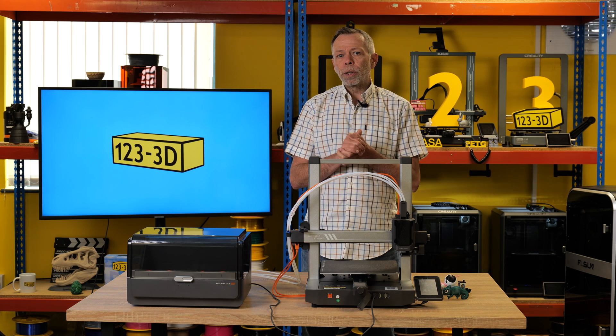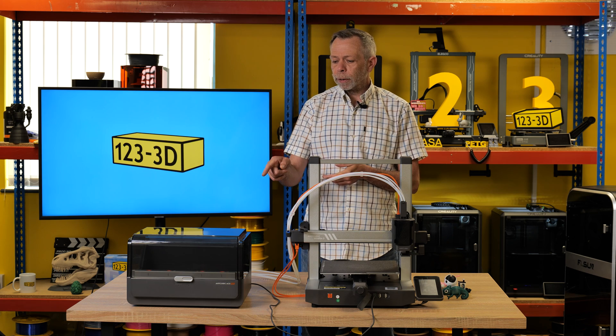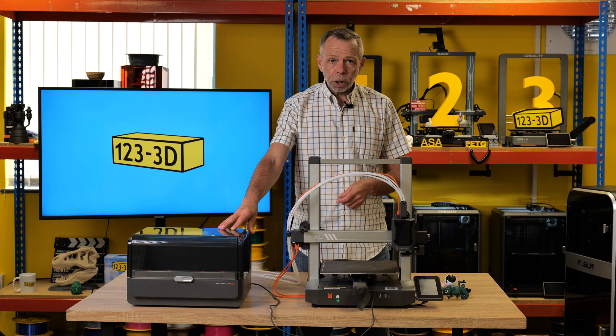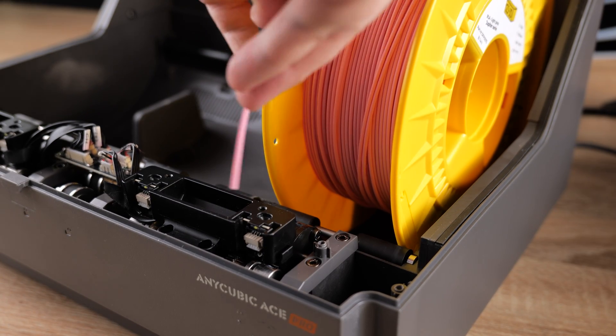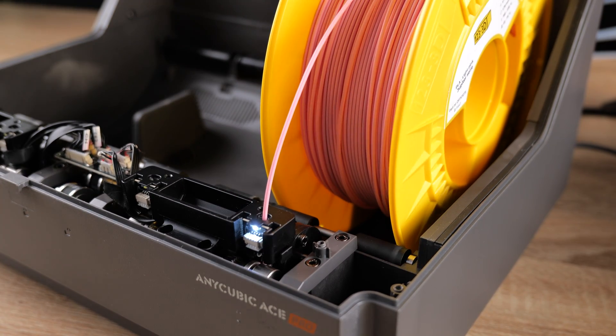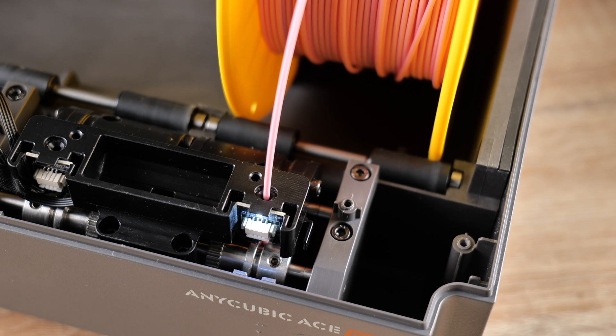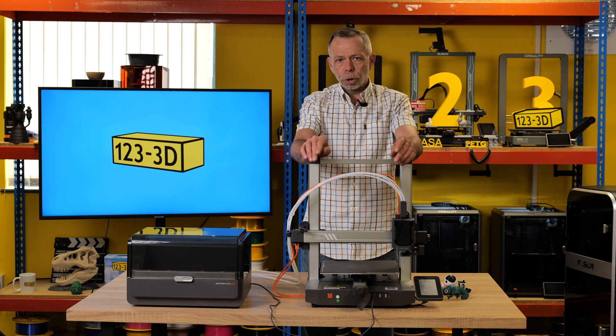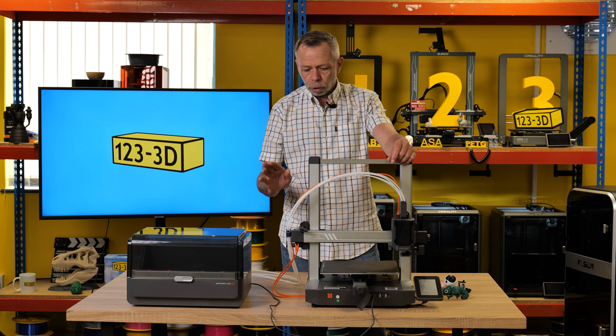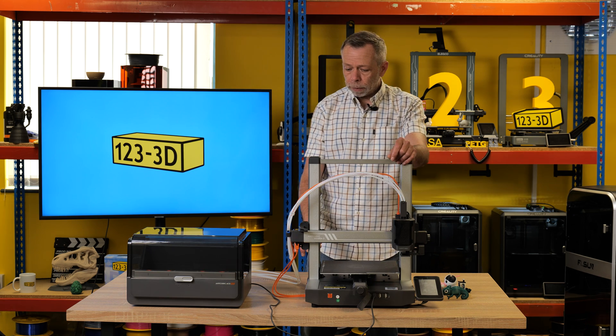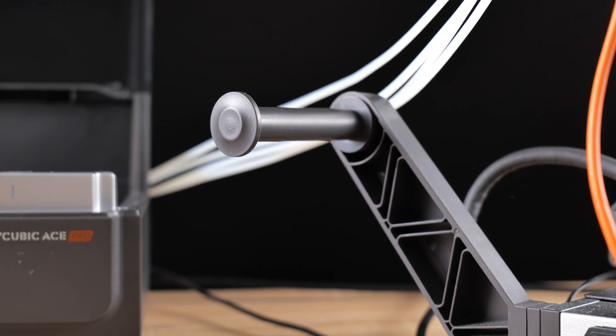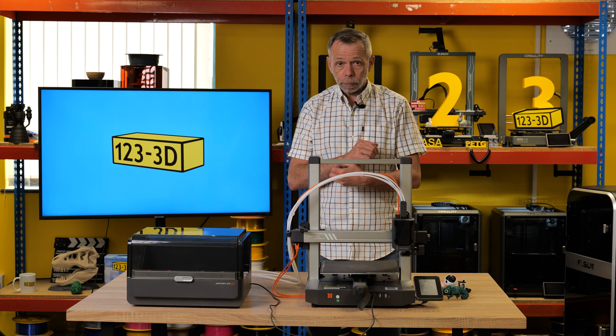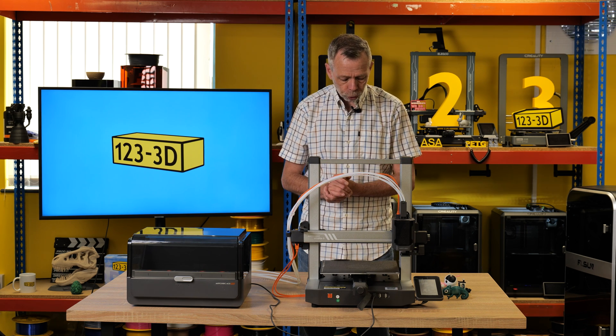As with most multi-material units, you cannot print TPU or TPE from the Ace unit. Inside the unit itself, there is an extruder motor. The extruder motor will pick up the filament and then try and push the filament through the Bowden tube to the extruder on the printer. Flexible filaments do not like it. They're too soft. They don't push down the tube correctly. So if you're going to print with TPU or TPE, then you have to use the external spool holder, print direct from that into the extruder. If you do that method, the machine is quite capable of printing with TPU and TPE. Not an issue at all.